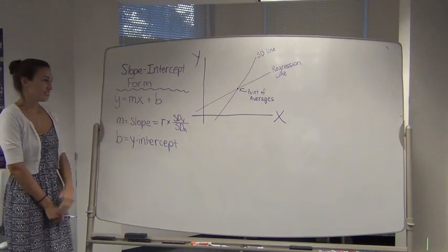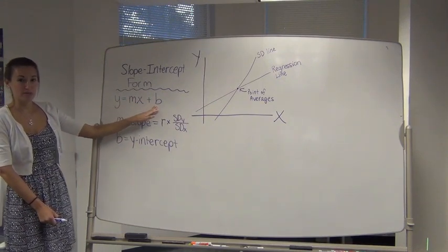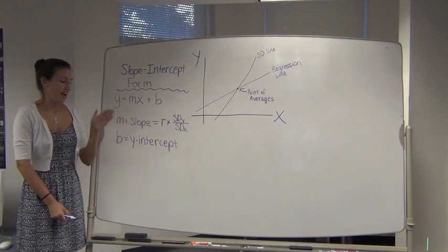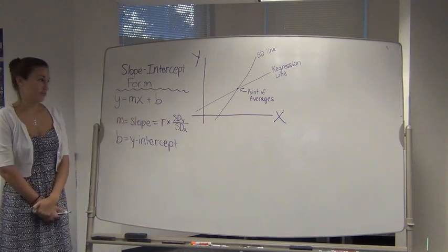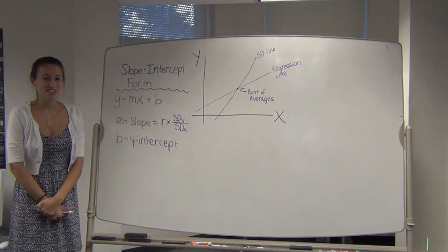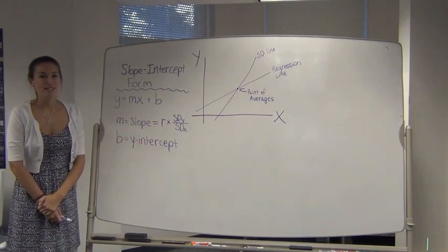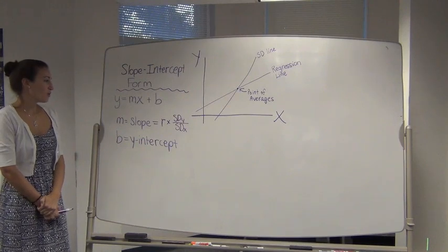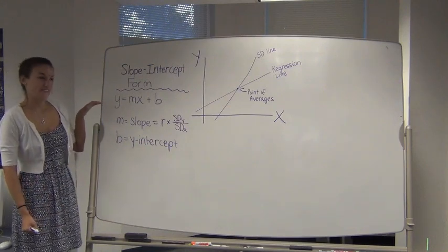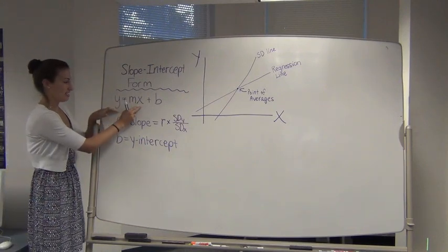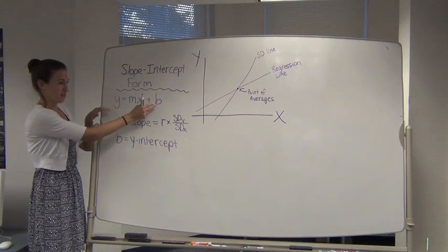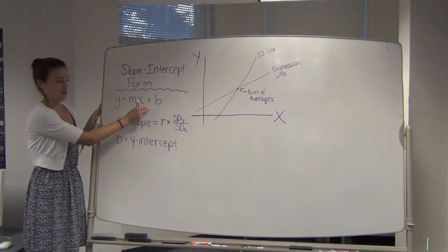Now we need to solve for our b to be able to make our predictions. Solving for b, our y-intercept, doesn't necessarily have that exact formula like the slope does. But instead, we're going to plug in values of y and x, and then we'll know our m in order to get that one last variable, b.